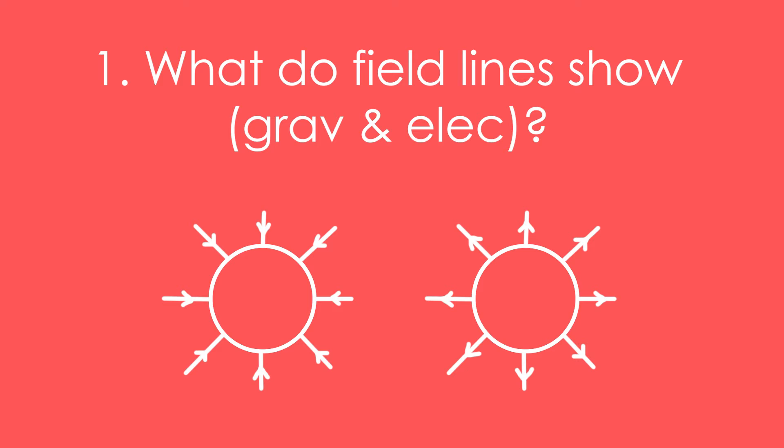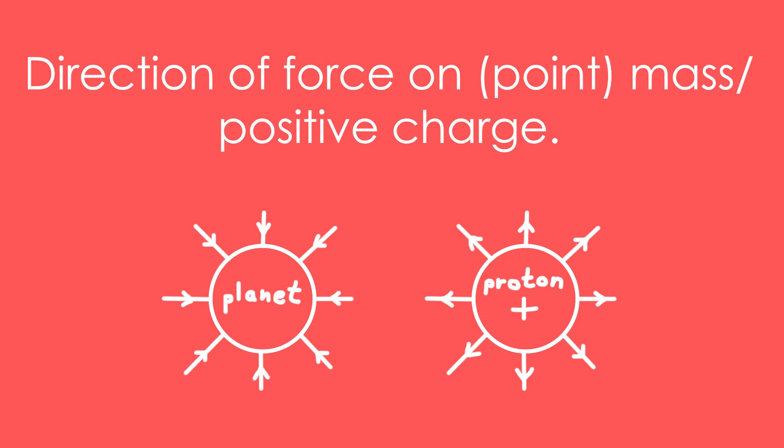It's slightly different for gravitational and electric fields. For gravitational fields, it shows the direction of force on a point mass. We know that's always attractive, so it's always towards the mass. But for electric fields, it's the direction of force on a positive charge, a positive test charge. So that means they go away from positive things and towards negative things.